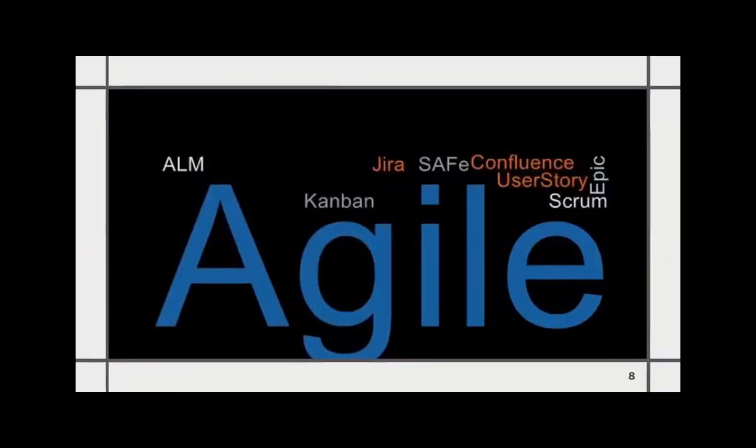An agile way of working via scrum, safe, or Kanban framework helps to keep alignment across teams in AI project workflow.